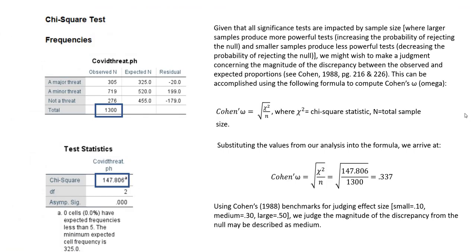It's worth noting that the power of significance tests is impacted not only by effect size but also by sample size, so you may want to compute an effect size measure to judge the magnitude of the discrepancy. An index you can use is Cohen's omega, computed by taking the square root of the chi-square value divided by the total sample size n. Our Cohen's omega value is 0.337. Using Cohen's benchmarks — small = 0.10, medium = 0.30, large = 0.50 — we would judge this discrepancy as medium in magnitude.